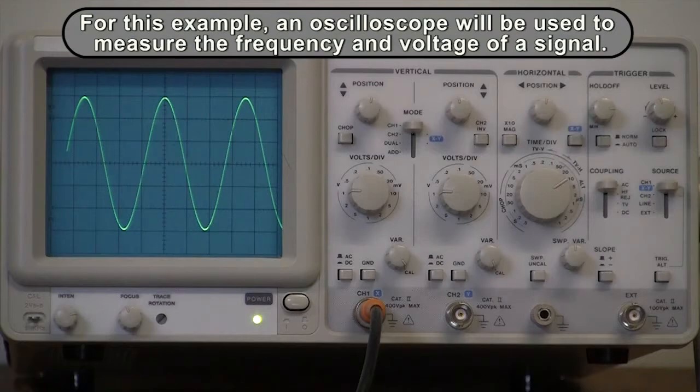For this example, an oscilloscope will be used to measure the frequency and voltage of a signal.